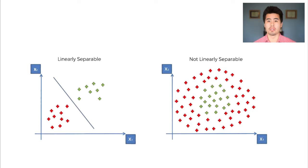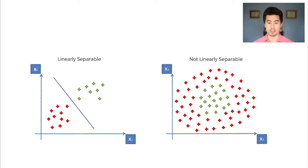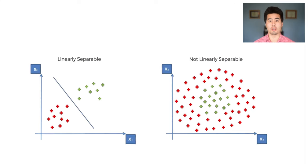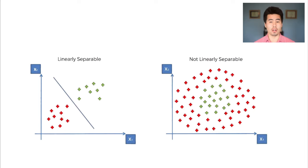So far we've talked about linear regression and logistic regression — models to look for trends or to classify data. In both of these models, we've assumed that your models are linear, which is to say that your input variables all contribute directly to the outcome and that the outcome is simply a weighted sum of the contributions of each of your input variables with very little interaction between them. Today we're going to move on to slightly more complex problems where that assumption might not hold.